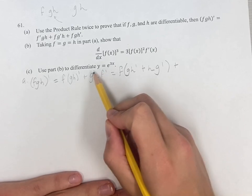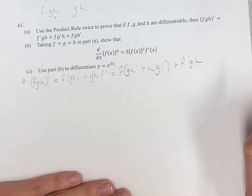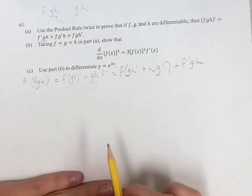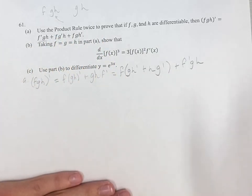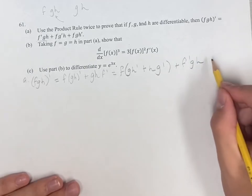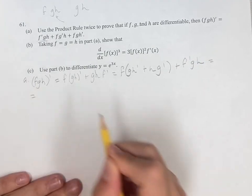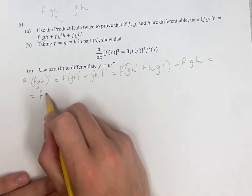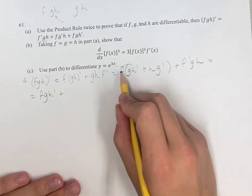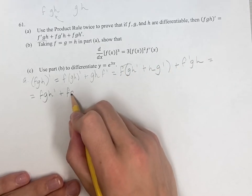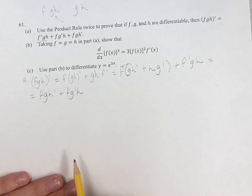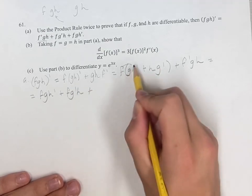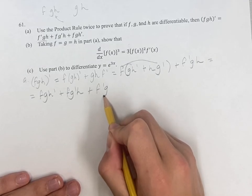I'm going to rearrange this to plus f prime gh, because that's the form that it's in — it's ordering fgh instead of putting the derivative term at the end. But it doesn't really matter; if you don't notice that until the end, that's fine. But distributing, we get fgh prime plus fg prime h. Making sure it goes fgh — this is fhg prime, I'm just rearranging it. Plus f prime gh.